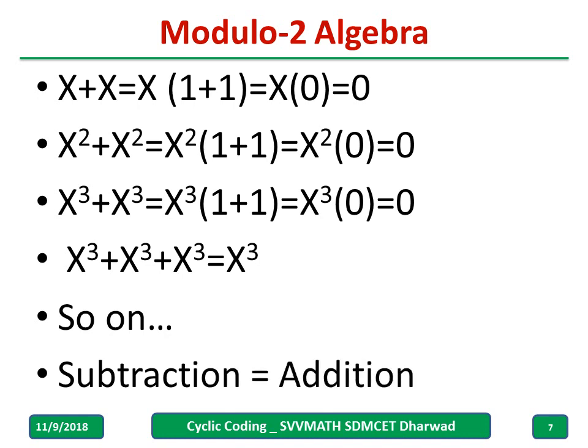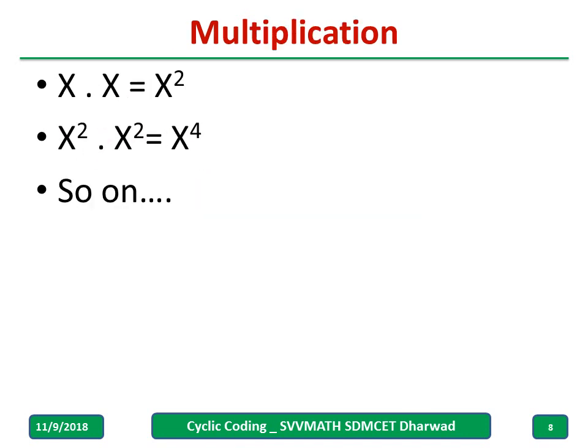And remember subtraction is equal to addition most of the time because X plus X is 0, even in general what you write X minus X also equals 0. Most of the time we never bothered about the polarity in this chapter. And X into X equals X², X² into X² equals X⁴ and so on.